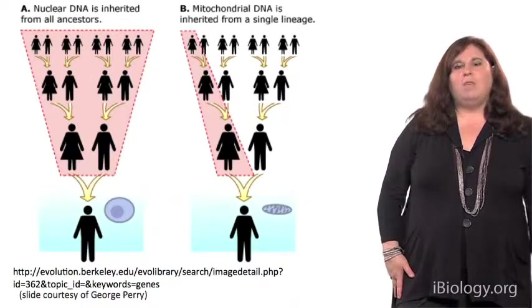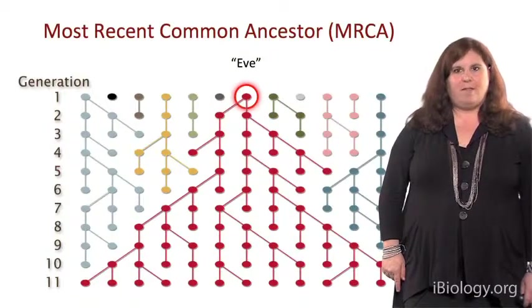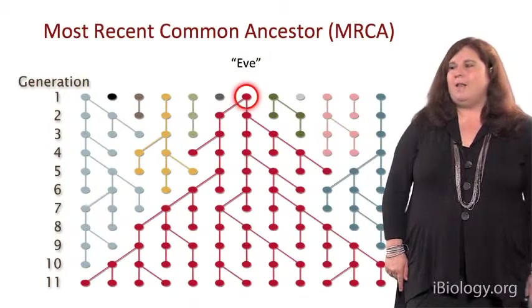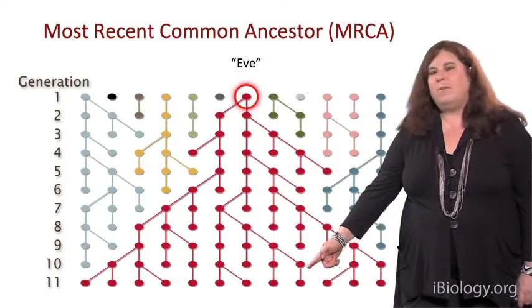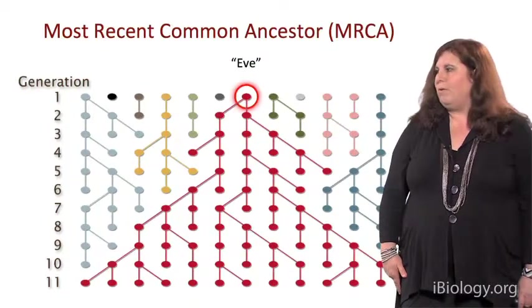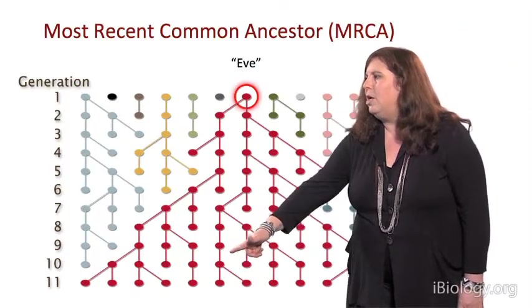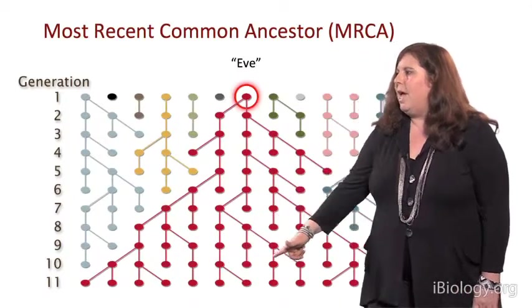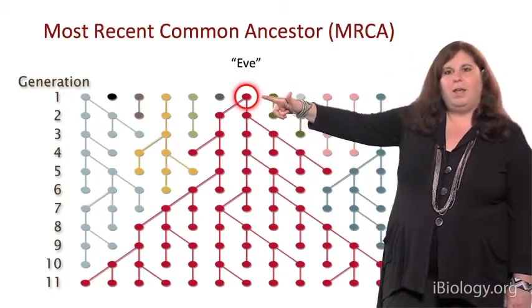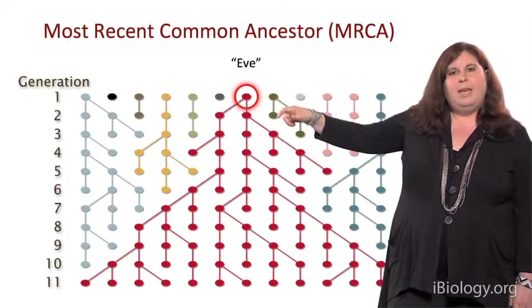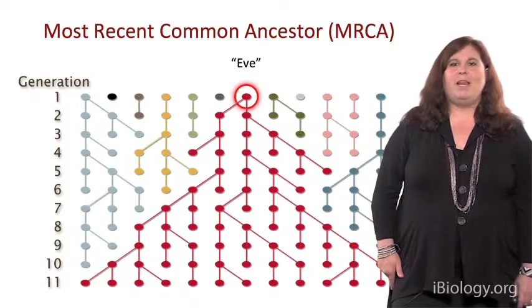We can trace mitochondrial DNA back to a single common female ancestor, and that's why it's been very useful for human evolutionary genetic studies. For example, if we consider these dots to be mitochondrial DNA lineages starting at Generation 11 at the bottom, shown by the red dots, at some time in the past these lineages coalesce back to a common ancestor, and ultimately they all coalesce back to a single common ancestor. In the popular literature, this single common ancestor is often referred to as mitochondrial Eve.